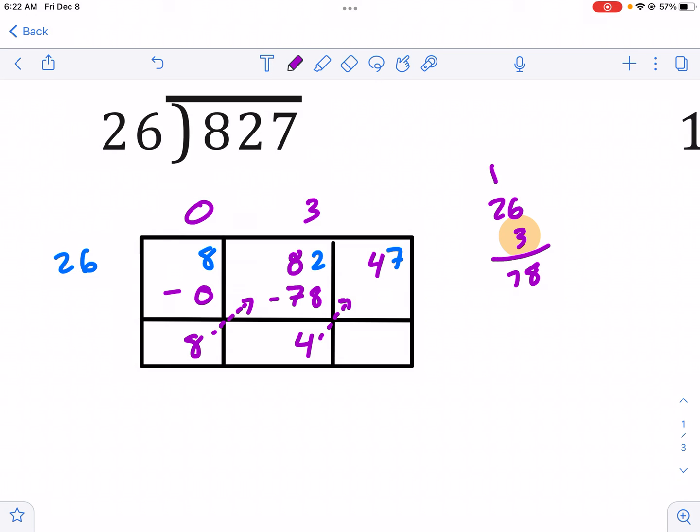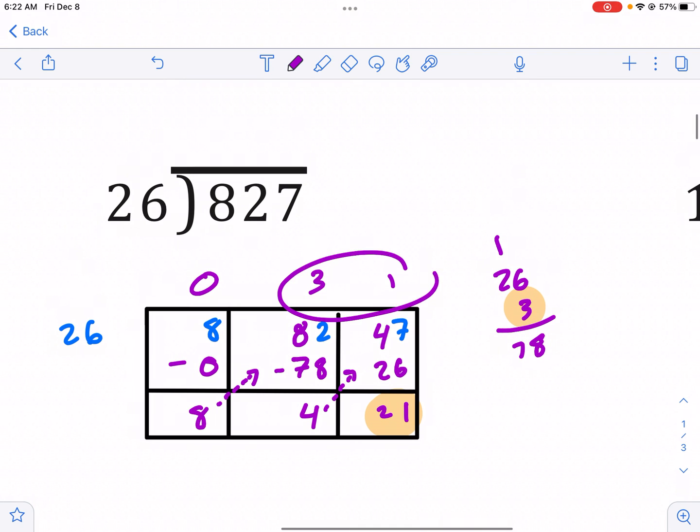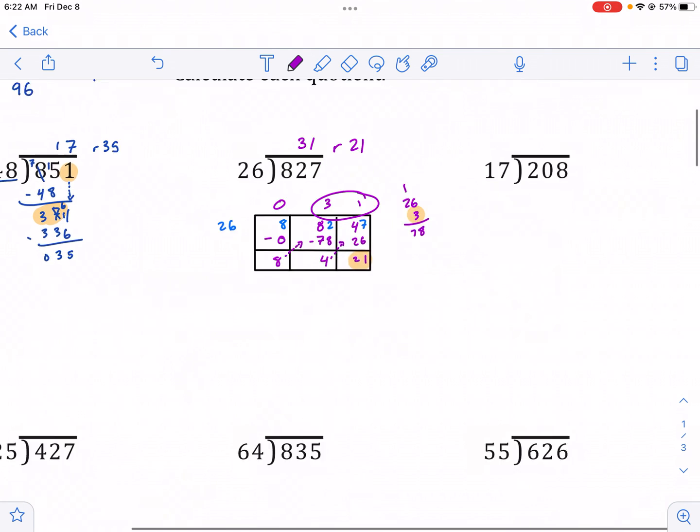My new number is 47, not 7, otherwise it wouldn't go into it. And now I see how many times 26 goes into 47. And it's only one time, two times would take me to 52. So I'm going to keep this as 26, and I have my remainder right here. So my answer is going to be 31. That's that number right there, 31. And then my remainder is 21. And that's going to be my answer.